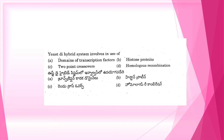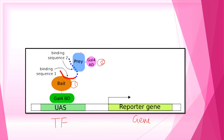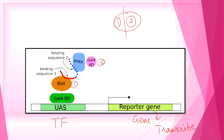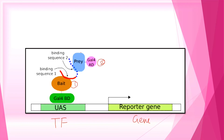The two-hybrid system is important and involves two plasmids and two proteins. The transcription process is key — transcription starts at the transcription start site, but first the transcription factor binds to the promoter, and then moves to the transcription start site. It involves DNA binding and activation domains.